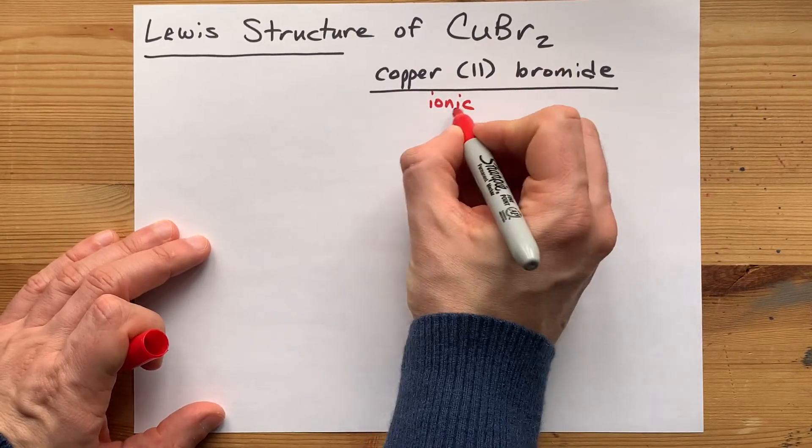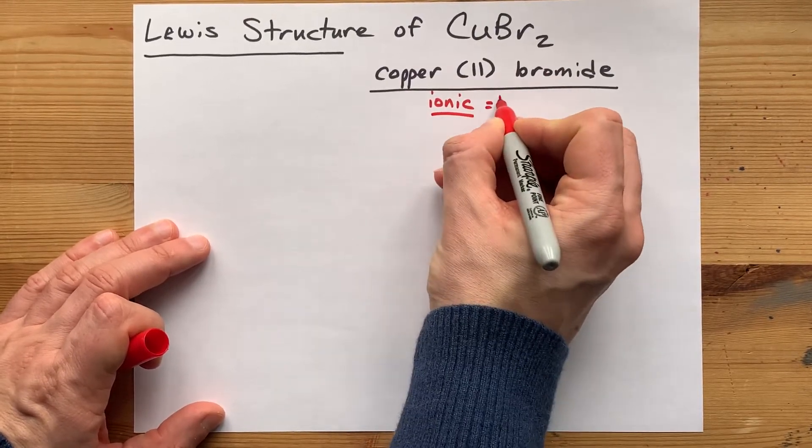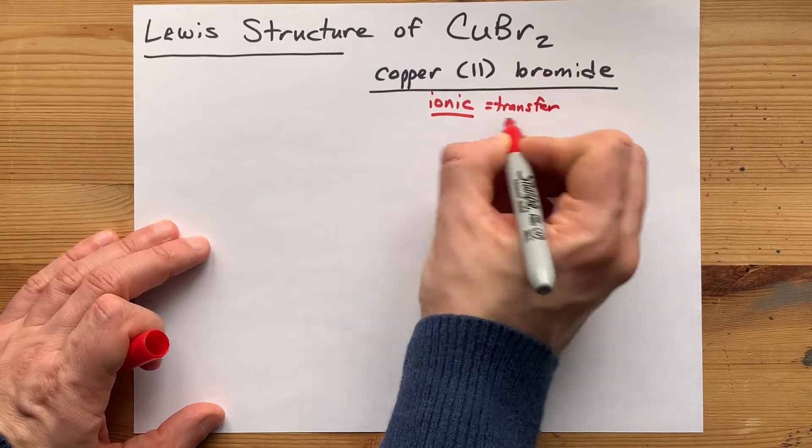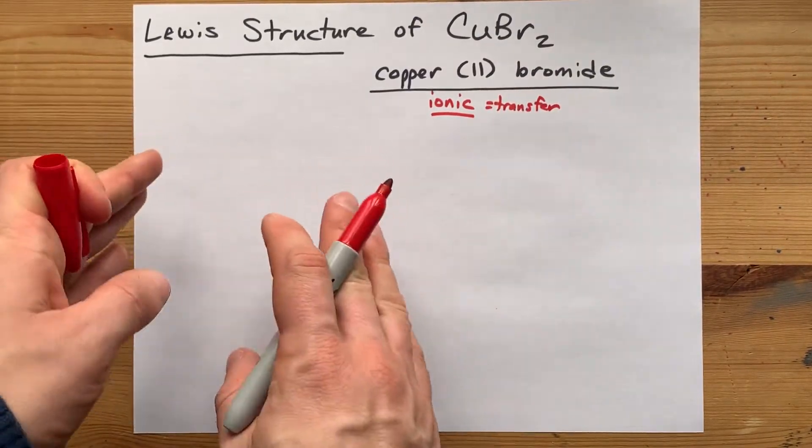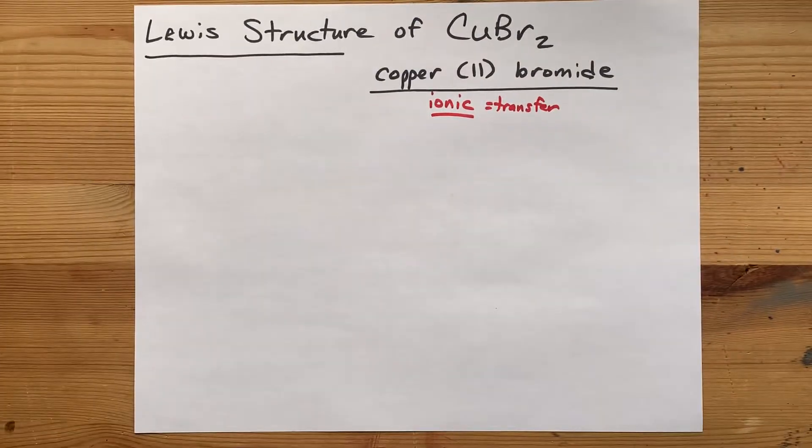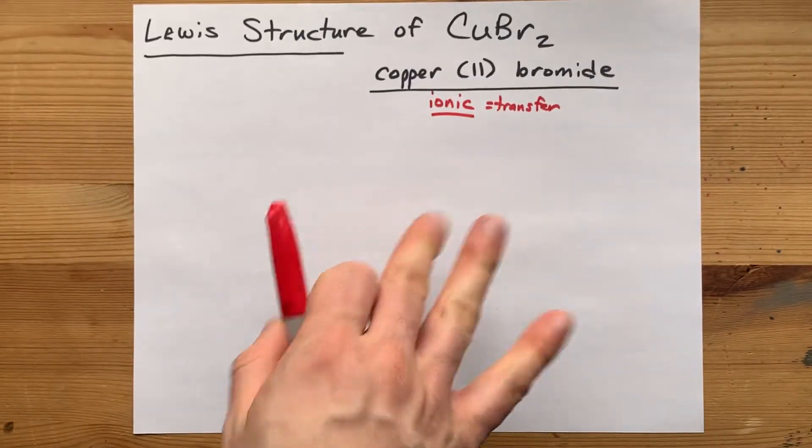The reason it's important is that a metal and a non-metal will always bond together to form an ionic compound, and that is a transfer of electrons from metal to non-metal. Let's illustrate how that happens.